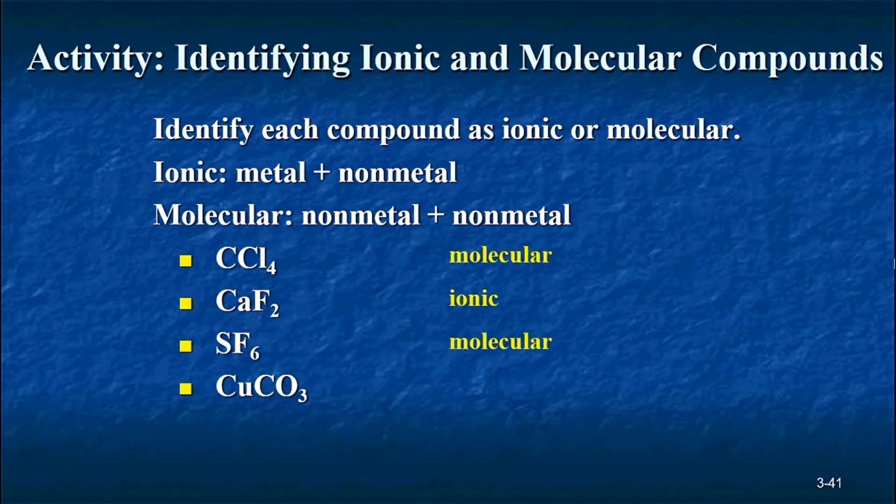SF6, excellent. Molecular because both elements, sulfur and fluorine, are non-metals. Next one, CuCO3. Okay, careful with this one. Very good. Even though C and O are non-metals, they are present here in the form of a polyatomic ion. How do we know? Well, because one of the elements here is copper, which is a metal. That means the compound is ionic, and therefore that CO3 portion there is a polyatomic ion.